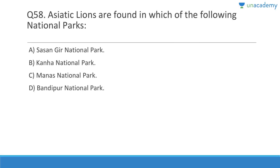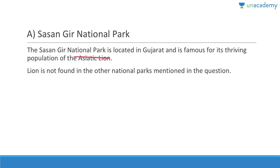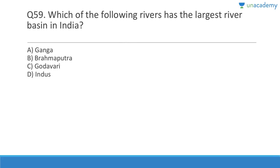Question 58: Asiatic lions are found in which of the following? Answer is Gir National Park. Sasan Gir National Park in Junagadh, Gujarat, is famous for its thriving population of the Asiatic lion. Lions are not found in the other national parks listed.